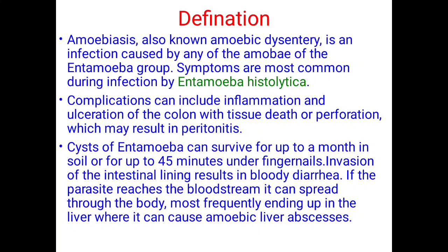Cysts of Entamoeba can survive for up to a month in soil or for up to 45 minutes under fingernails. Invasion of the intestinal lining results in bloody diarrhea. If the parasite reaches the bloodstream, it can spread through the body, most frequently ending up in the liver where it can cause amoebic liver abscesses.